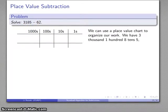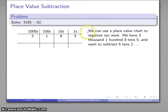And so I have 3,100, 8 tens, and 5. That's that number. I'll go ahead and set that down. And I want to subtract 6 tens and 2. So I'll go ahead and set that down.